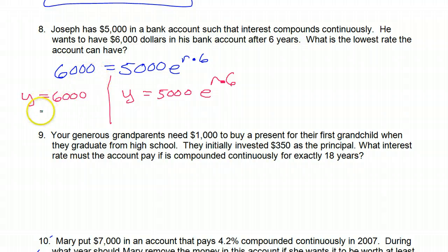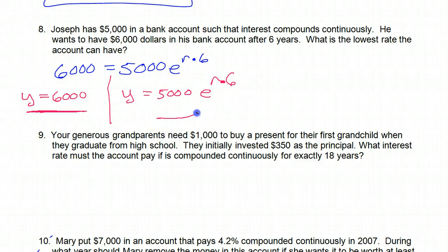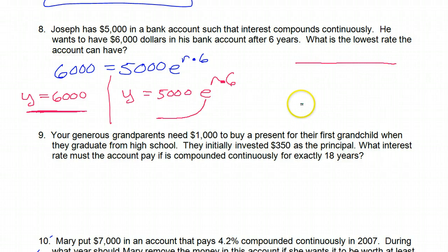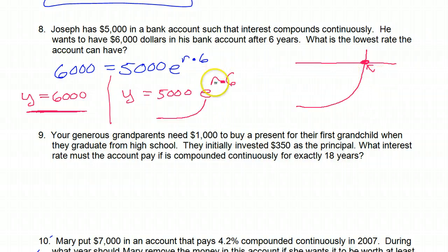Y equals 6,000 is just a horizontal line — Y equals a number is always just a horizontal line. The other function is an exponential growth function. So you're going to have a horizontal line up at 6,000 and an increasing exponential graph. Wherever they meet, that X value is going to be the rate you want, because R is the X value here.